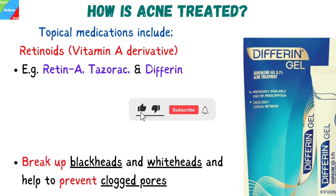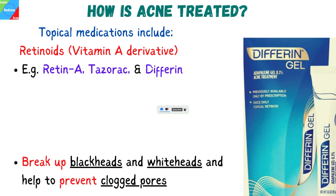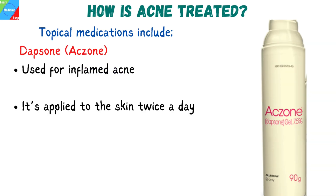Retinoids, which are a vitamin A derivative, break up blackheads and whiteheads and help to prevent clogged pores. Examples of these drugs are Retin-A, Tazorac, and Differin. Dapsone, known by the brand name Aczone, is a topical gel which also has antibacterial properties and can be used for inflamed acne. It's applied to the skin twice a day.